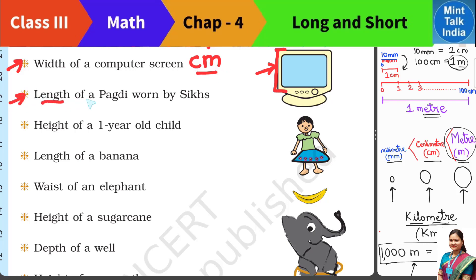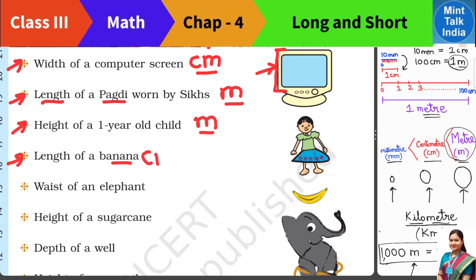The length of a paddy sari — they make a long piece of cloth — so we will measure that in meters. Third is the height of a 1-year-old child. The height of a child is measured in meters, because the height of a child is usually around one meter. The length of a banana is very small — we can measure it with a ruler in centimeters.